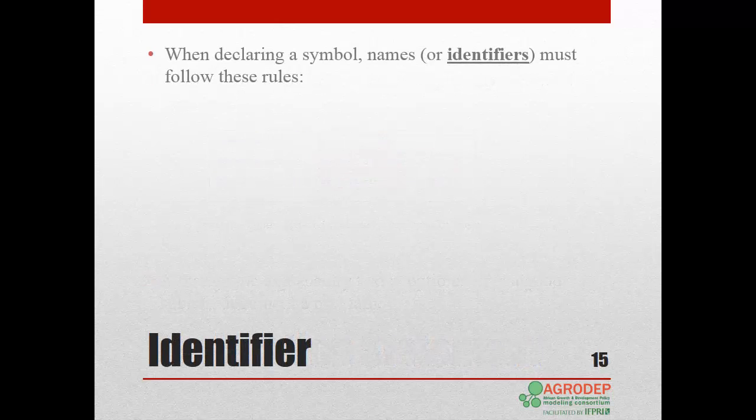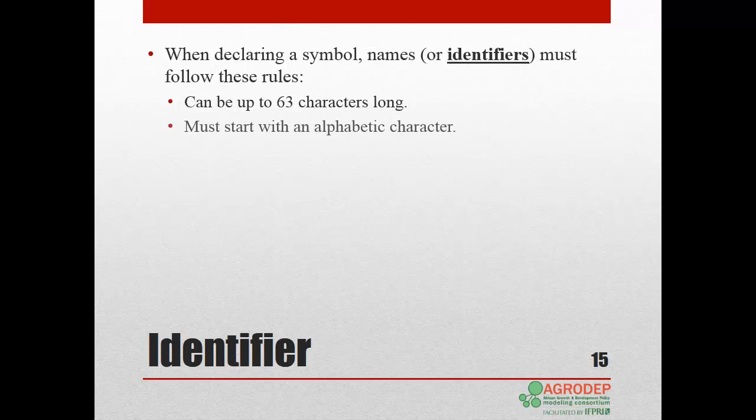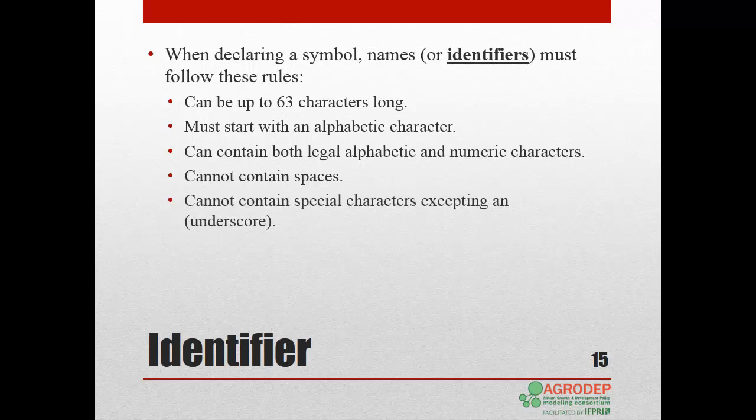When declaring a symbol, names or identifiers must follow these rules. They can be up to 63 characters long. They must start with an alphabetic character. They can include both legal, alphabetic, and numeric characters. They cannot contain spaces. They cannot contain special characters except an underscore. They cannot be GAMS reserve words.